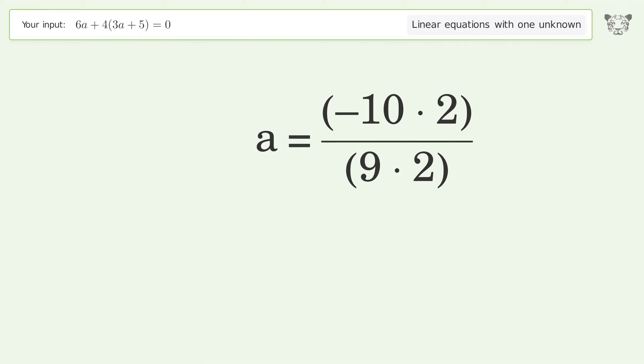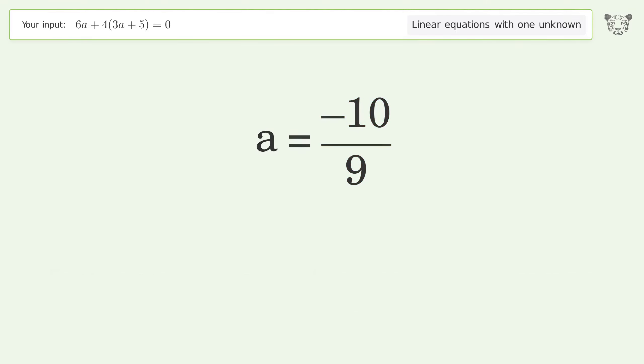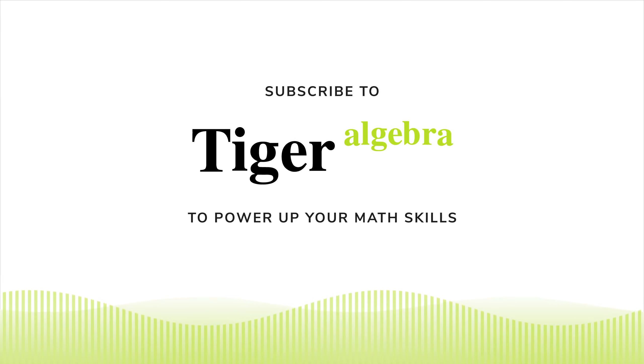Find the greatest common factor of the numerator and denominator. Factor out and cancel the greatest common factor. And so the final result is a equals negative 10 over 9.